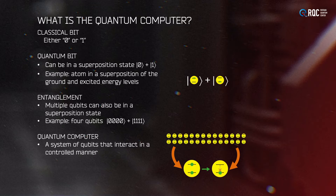This state of four qubits already does carry some information. Before I explain why such entangled states have advantage in terms of information processing, let me define the quantum register. There are many different implementations of a quantum computer, but in a simplified way, one can define the register of a quantum computer as a system of qubits that interact in a controlled manner.